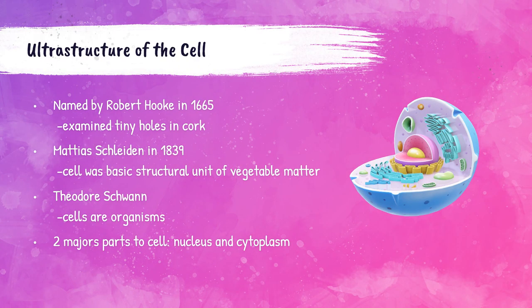Cells were first discovered and named in the year 1665 by a man named Robert Hooke. He was looking at a piece of cork under a microscope and noticed them, so he named them cells because they reminded him of what looked like prison cells.